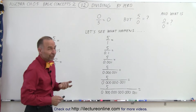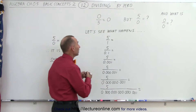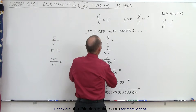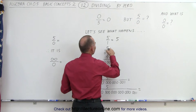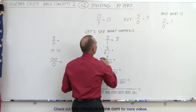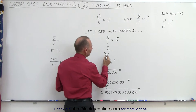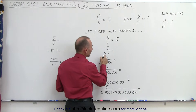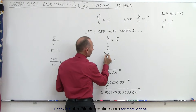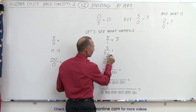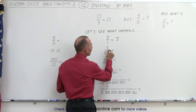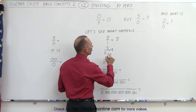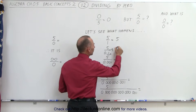First of all, five divided by one — well that's easy, that is equal to five. But what if we want to divide five by 0.1? To make the denominator into a one, we have to move the decimal place over one spot, so we need to do the same with the number five and put a zero there, giving us the number 50.